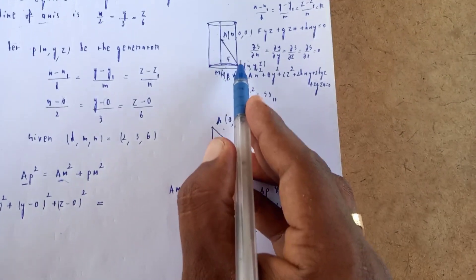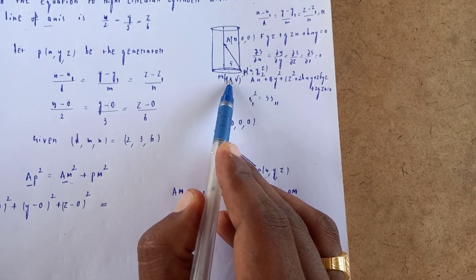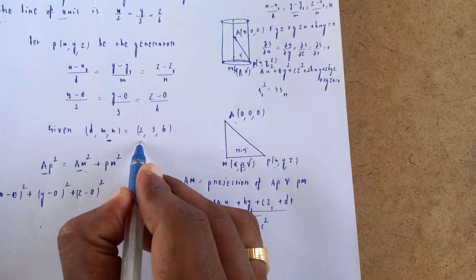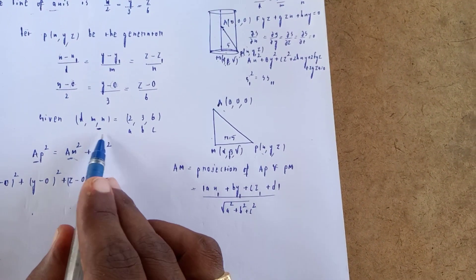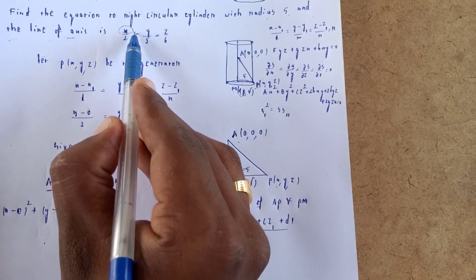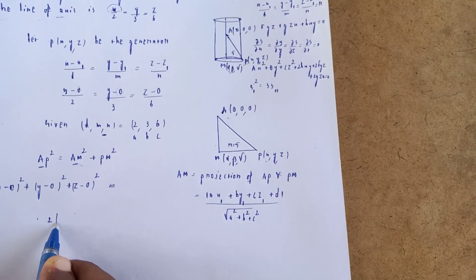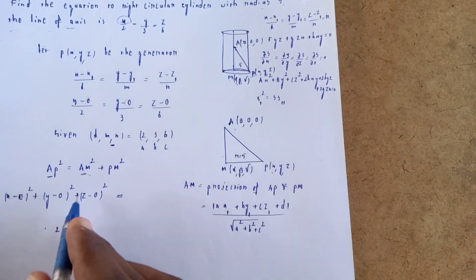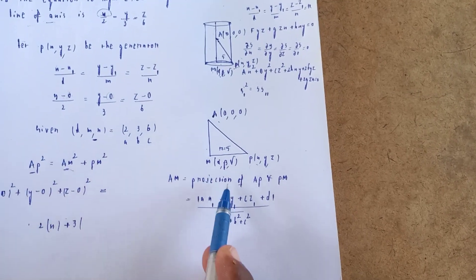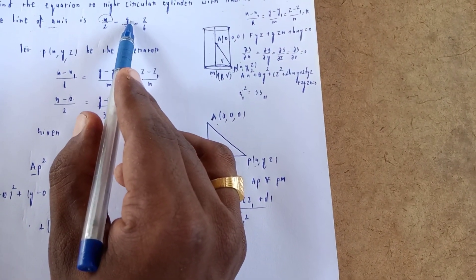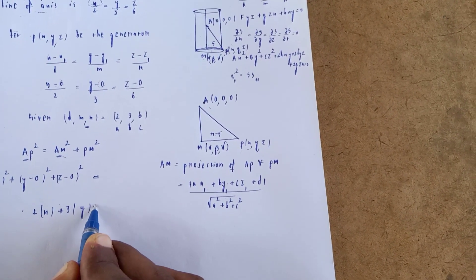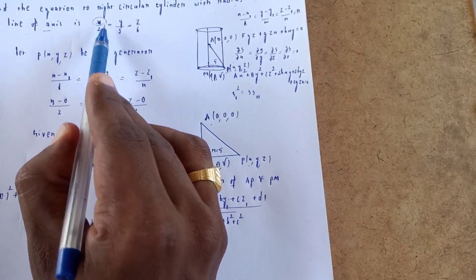AM is the distance on the line with elements a, b, c. So AM = (2x + 3y + 6z)/√(2² + 3² + 6²).